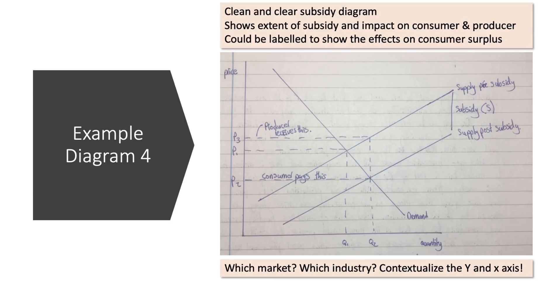So halfway through, three more diagrams. This is a nice, clear diagram on subsidy. So it's a subsidy diagram showing the extent of the subsidy, the vertical distance between the supply curves. It shows the impact on the price the producer receives, P3. The price the consumer pays, P2. That's okay. The quantities and prices are labelled clearly.